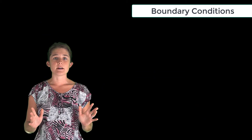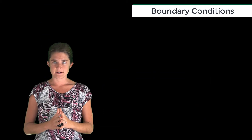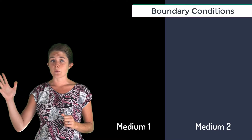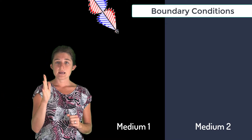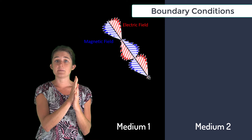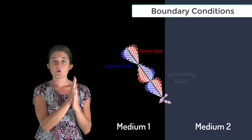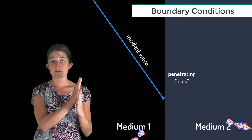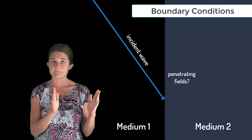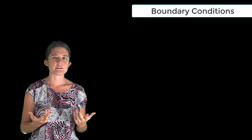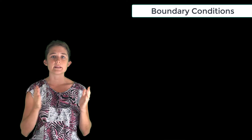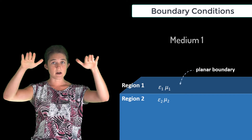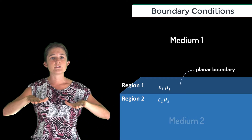The final topic for this module is boundary conditions: what happens if an electromagnetic wave traveling in one medium is incident upon a second medium? What conditions do Maxwell's equations impose on the fields crossing that boundary? To answer this question, let's imagine a planar boundary where medium one is in region one above the boundary and medium two is below.